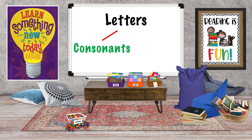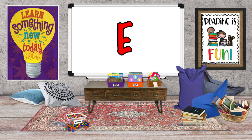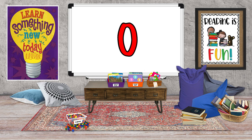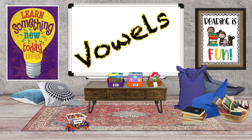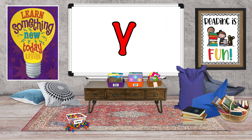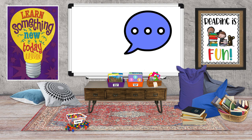We learned that there are letters called consonants and there are letters called vowels. The letters A, E, I, O, and U are vowels. Y can also sometimes be a vowel, but we'll go over that in another video.